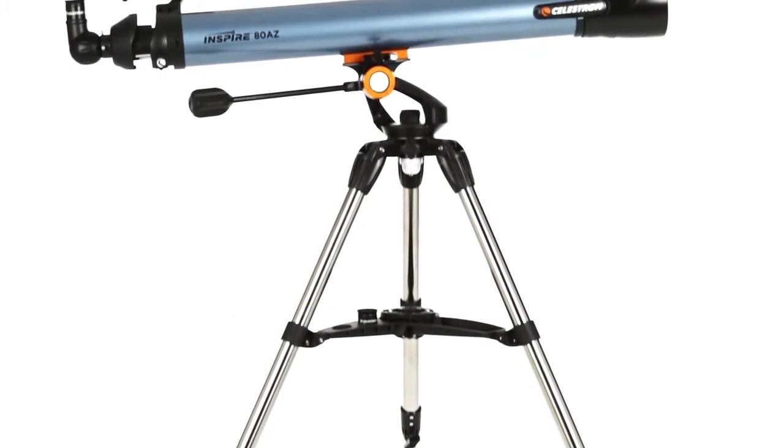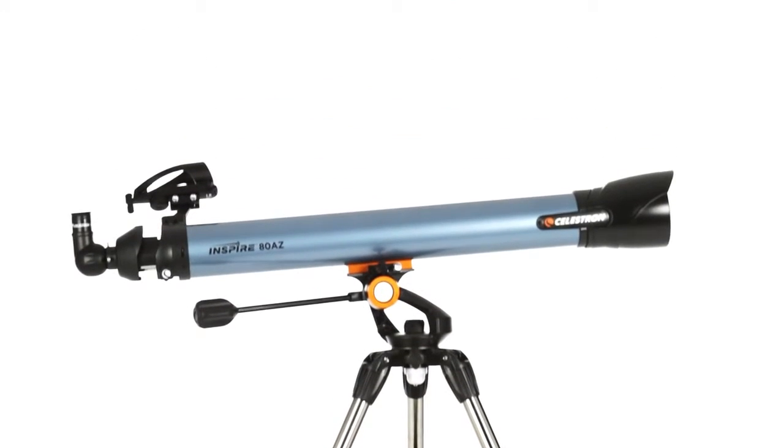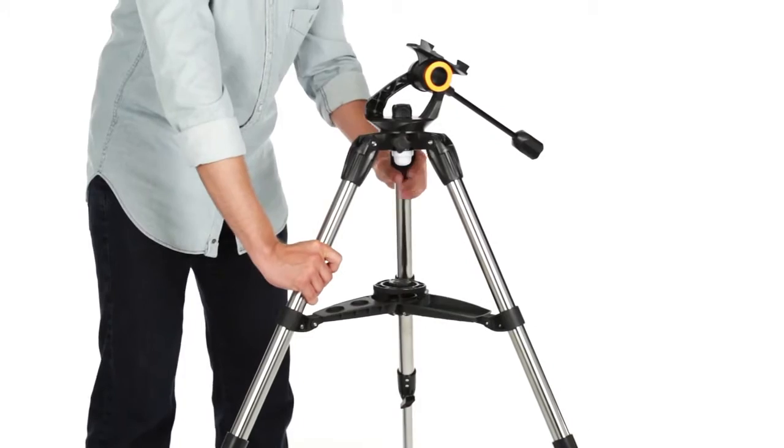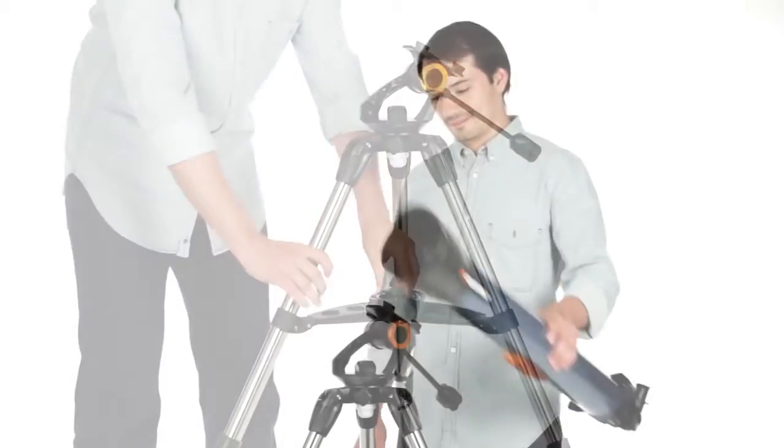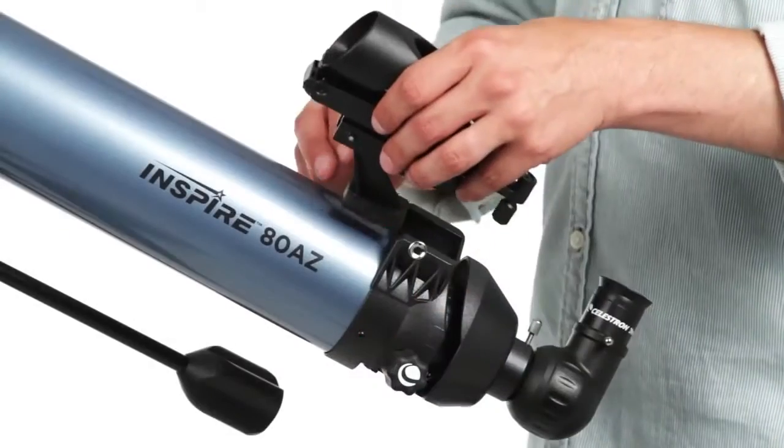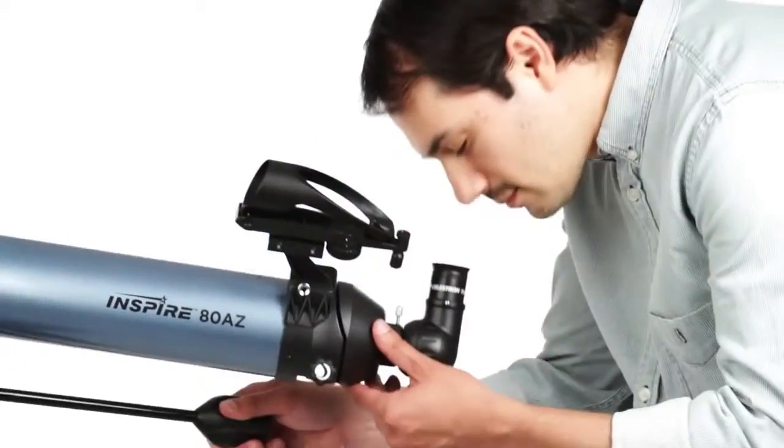Easy to transport and stow, Inspire telescopes feature the simplest setup of any telescope in its class. With the folding accessory tray, you just pop the tripod legs open and turn the lock knob. Then slide the telescope tube into the quick-release dovetail mount, affix the finder scope, and you're observing within minutes.